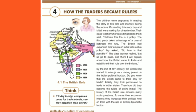Jay and Mitali were asking, 'Sir, how is that possible? How can this happen?' The teacher said, 'Let's go to the class, then I will explain.' The British came to India and established their rule over the Indians.